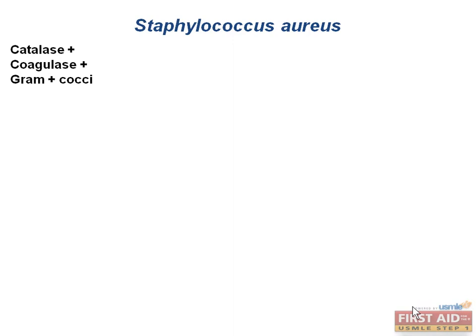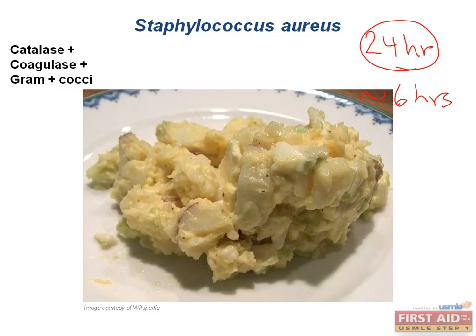When you read a question that says a bunch of people at a picnic develop vomiting and watery diarrhea, think staph aureus preformed toxin. It is the most common cause of food poisoning, referred to as the 24-hour bug. Ingestion of the preformed enterotoxin produces nausea and vomiting usually within six hours, and it tends to resolve within about a day. The classic question involves a picnic with potato salads, sandwiches, and other mayonnaise-containing foods that have been sitting out.